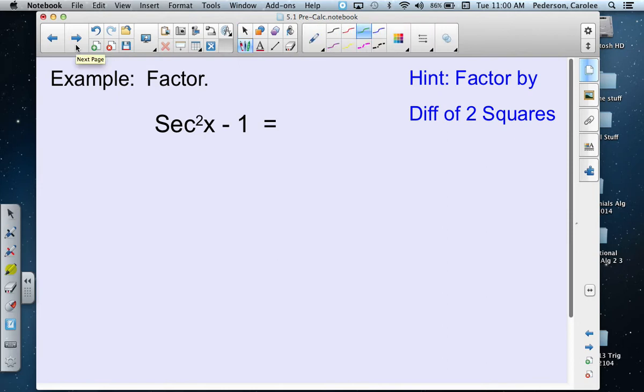The difference of two squares rule: a² - b². We learned this in Algebra 2 - to factor this, it becomes (a - b)(a + b).